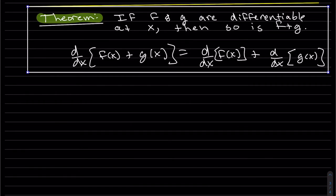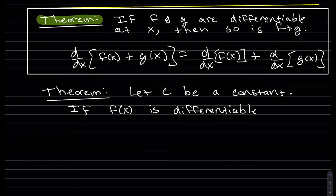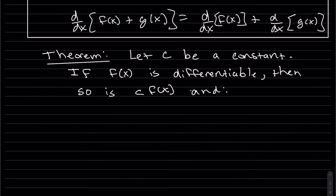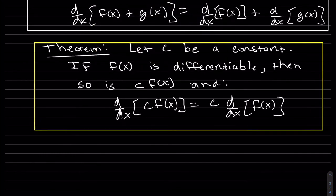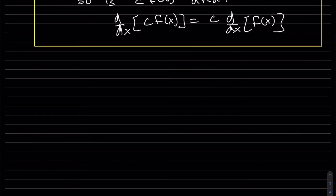One more thing about a constant. So this is the constant. Remember, you can factor out a constant from a limit. So since the derivative is a limit, you can factor the constant out of a derivative too. So the derivative of a constant times a function is a constant times the derivative of the function. So now let's see some examples utilizing these two.